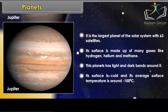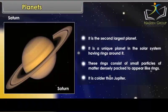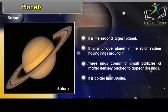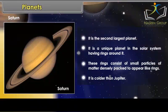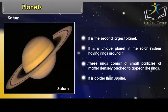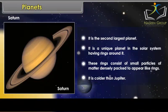Saturn is the second largest planet. It is a unique planet in the solar system having rings around it. These rings consist of small particles of matter densely packed to appear like rings. It is colder than Jupiter.